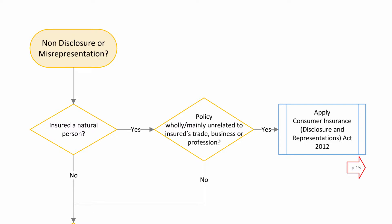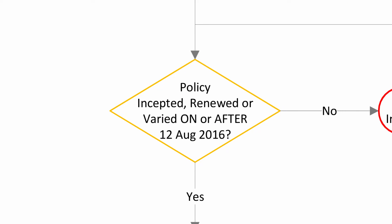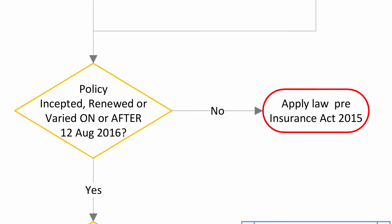I will cover CIDRA in a separate video. If the policy is not unrelated to the insured's business, then you are not dealing with a consumer policy — in that case, follow the no arrow and move down the page. You now have to ask a key question: when did the policy incept or renew, or was there a relevant variation? For the Act to apply, it must be on or after the 12th of August 2016. If you answer no, then deal with the claim applying the law as it was before the Act came into force. But if you answer yes, move down the page following the yes arrow.